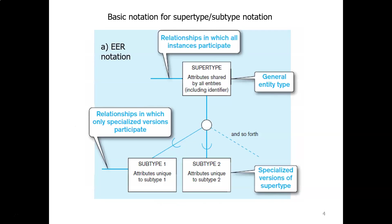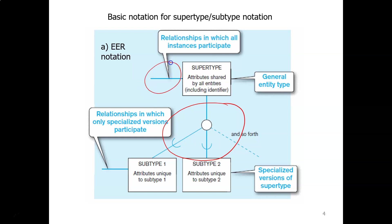The ER diagram notation for supertype and subtype uses rectangular boxes to represent them, just like any entities. You draw a line, then a circle, then lines connecting to the subtypes, with half circles to show that these are subtypes. Relationships with the supertype are drawn with a line connecting to the supertype, and relationships for the subtypes are drawn with a line connecting to the subtype.